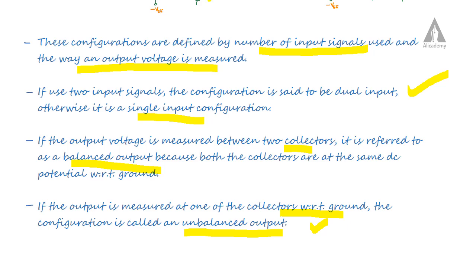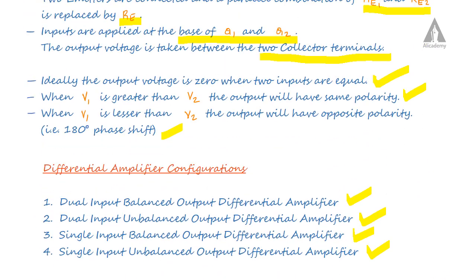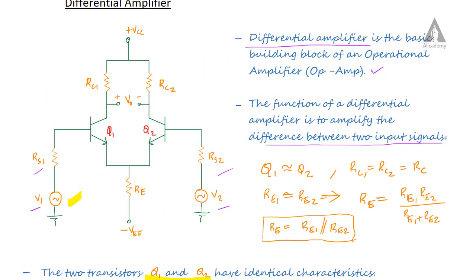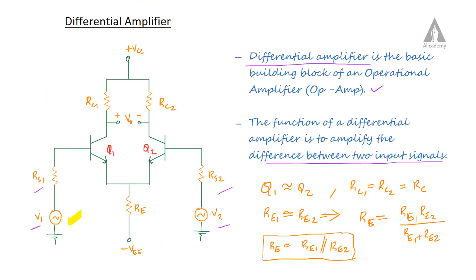So the differential amplifier is the basic building block of an operational amplifier, and the function of the differential amplifier is to amplify the difference between two input signals. Please like, comment, and subscribe. Thank you.